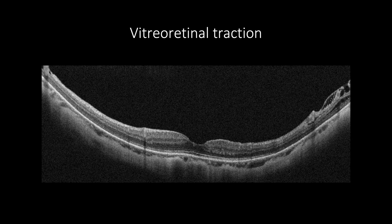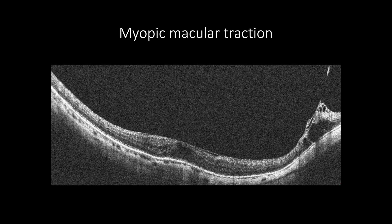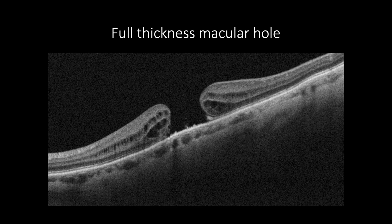OCT is the tool of choice to diagnose vitreoretinal abnormalities, such as epiretinal membrane, which appears as a hyper-reflective band causing traction at the arcade or at the center of the macula, causing myopic traction maculopathy, leading to cystoid macular changes mostly in the inner retinal layers, and tubular forms inducing schisis, and in severe cases, lamellar or full-thickness macular holes.